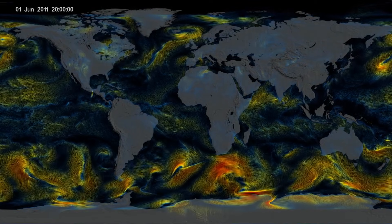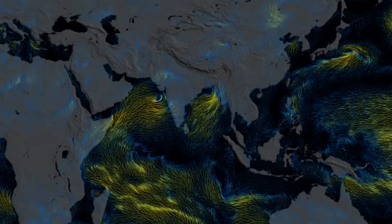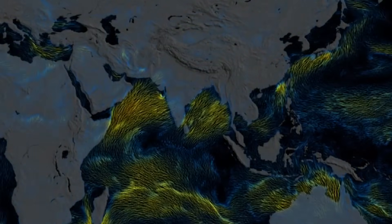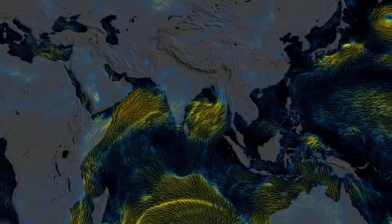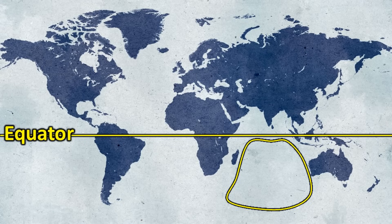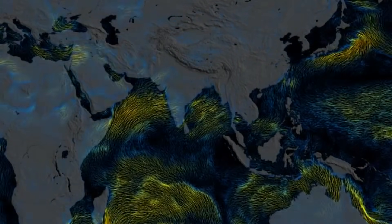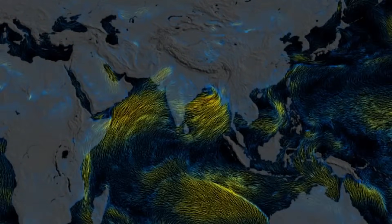This seasonal wind reversal happens in many regions above the equator across the globe. However, when it occurs over the Indian subcontinent, there is something unique about it. If you look at a world map, you will notice that India lies just north of the equator, and directly south of India there is no significant landmass — only the vast expanse of the Indian Ocean. This geographical setup is quite rare, and this unique positioning plays a crucial role in the intensity and behavior of the southwest monsoon.